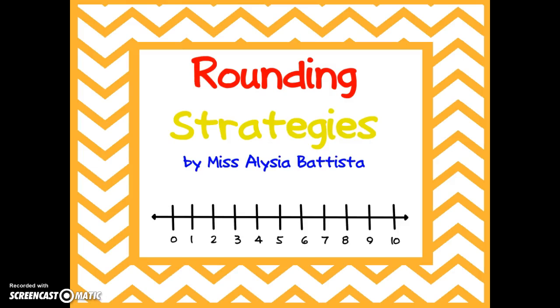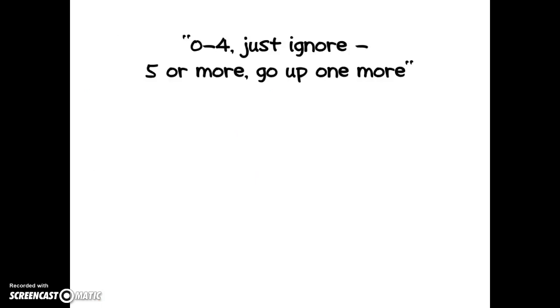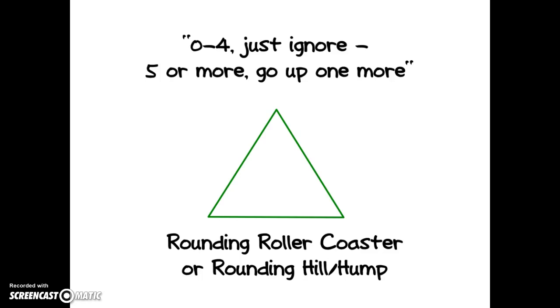This is Miss Batista. I'm here to teach you rounding strategies today. Have you ever heard the saying zero to four just ignore, five or more go up one more? Usually it's used with a rounding roller coaster which is also known as a rounding hill or hump. It looks kind of like a triangle.